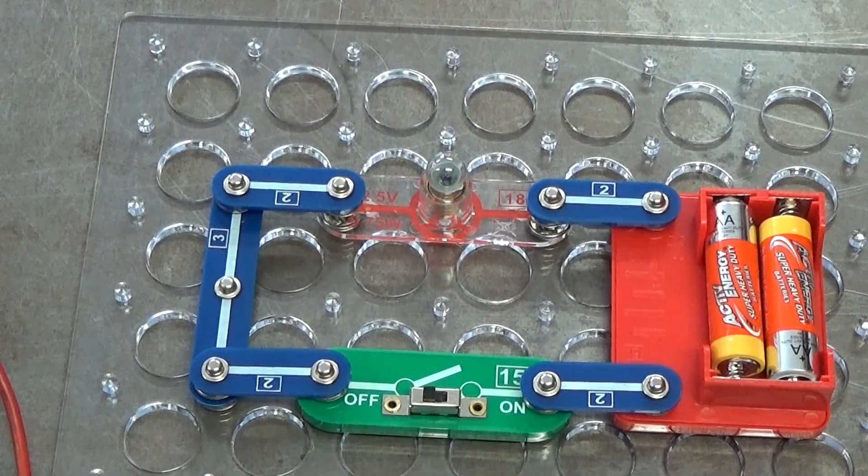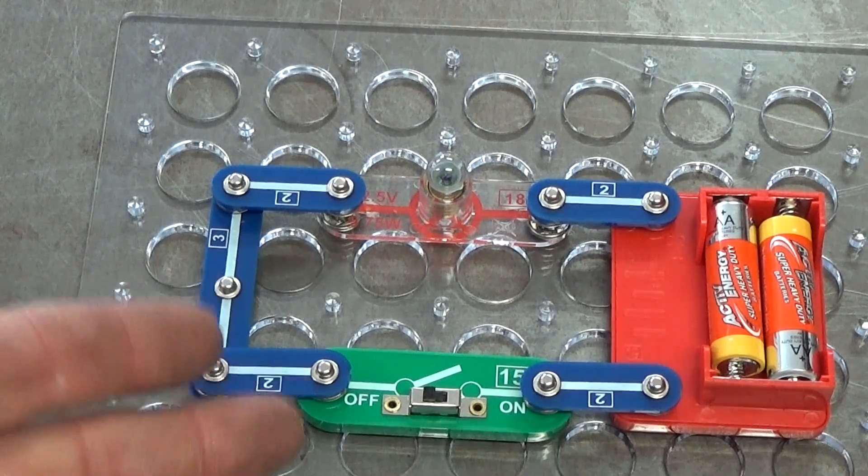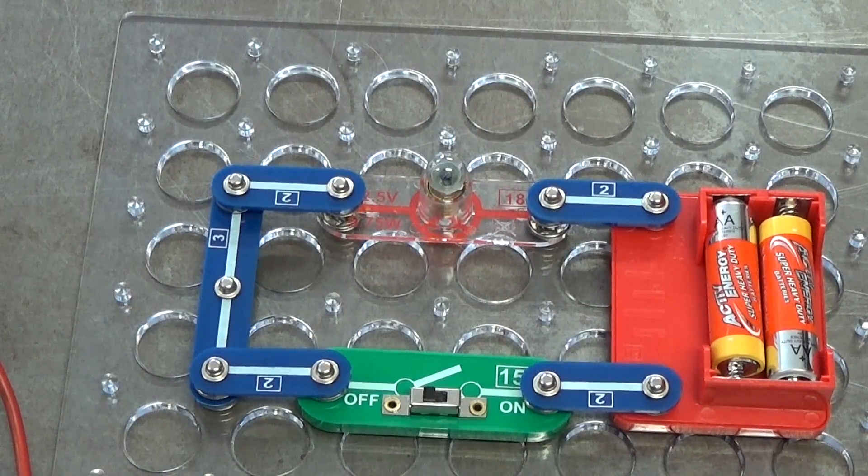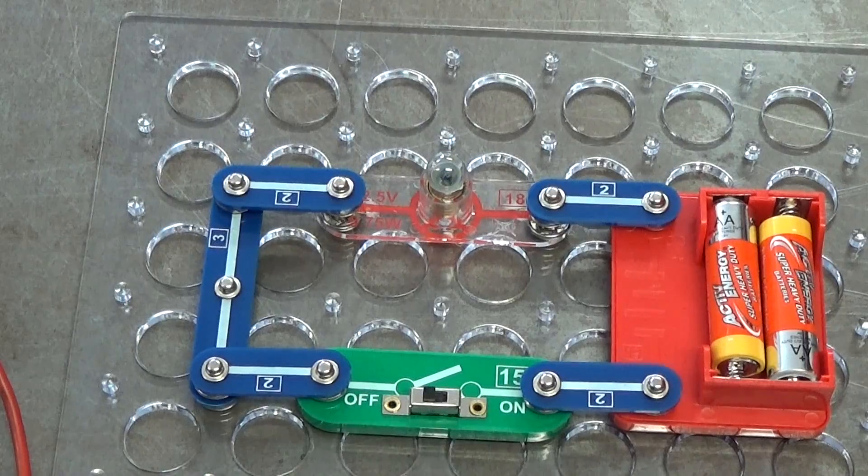Now if you've got a problem with this circuit and the light globe doesn't light up, well, what are you going to check? So you're going to check a couple of things, and I'll zoom out for a second so we can see the multimeter.